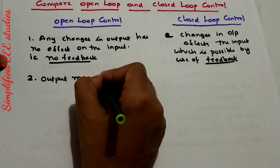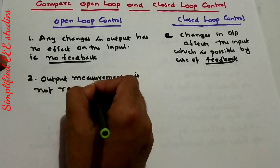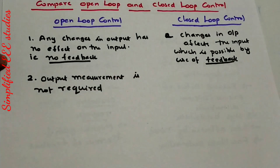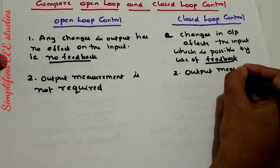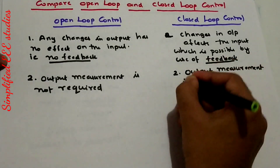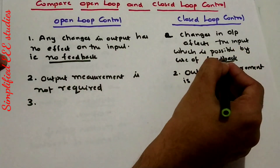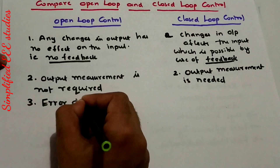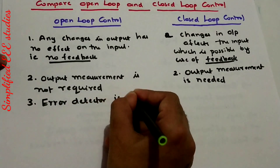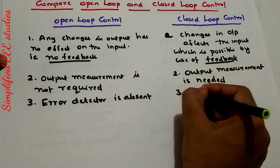Second point: output measurement is not required in an open loop system. In a closed loop control system, output measurement is required. Third point: the feedback element is absent in open loop, but the feedback element is present in closed loop. Fourth point related to error detector — in open loop, the error detector or comparator is absent, but in closed loop, an error detector is necessary.